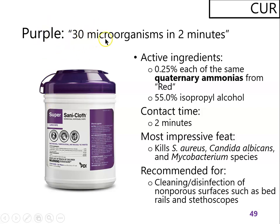The purple product kills 30 microorganisms in two minutes — a faster contact time. It has the same quaternary ammonias as the red product but at twice the concentration: 0.125% each versus 0.0625%, plus isopropyl alcohol — a mix of three active ingredients. It can kill Mycobacterium, Staphylococcus aureus, and even fungi. This is useful for cleaning and disinfecting many different clinical surfaces with a two-minute contact time. Notice it still doesn't claim to kill endospores, so it wouldn't be appropriate after a Clostridioides difficile infection.